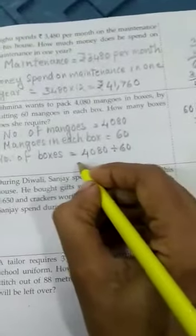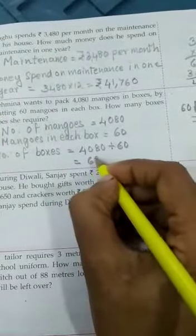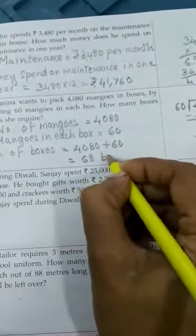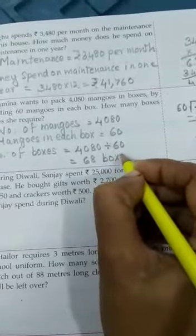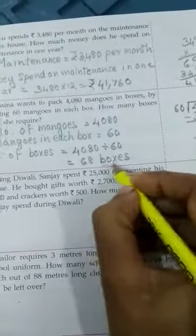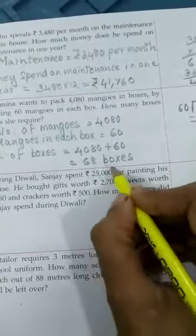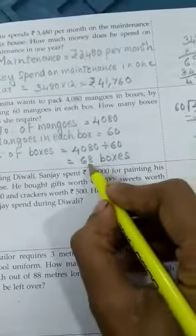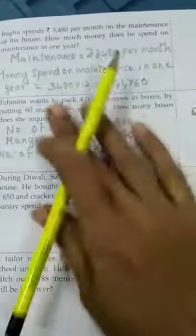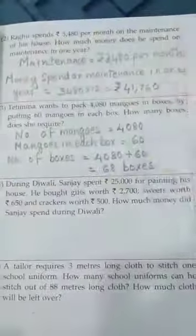That means what will be the answer here? 68. What is 68? Boxes. Here the answer is in boxes, and in the previous question it was money. So, this is the way you solve word problems.